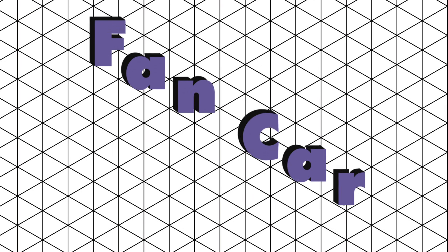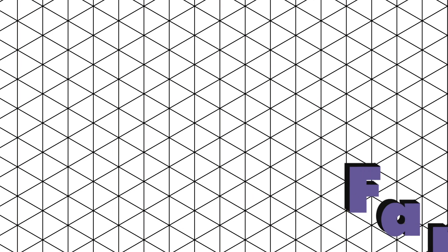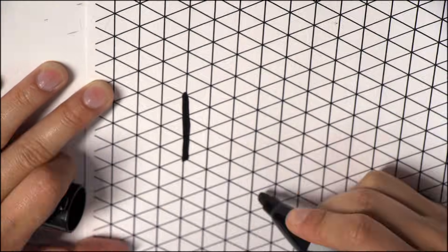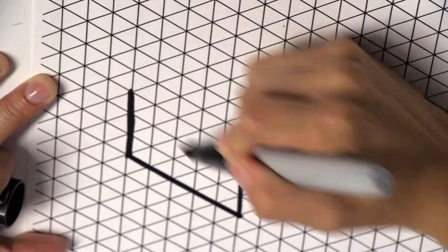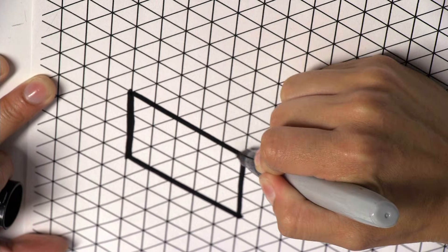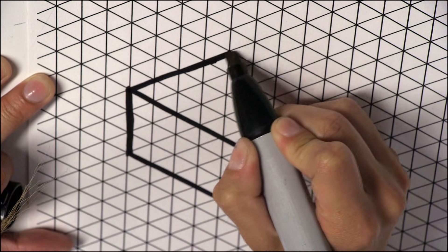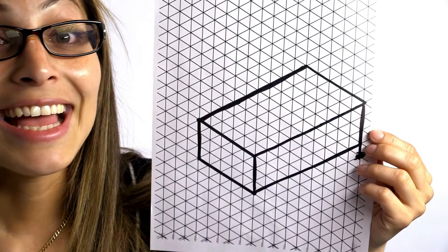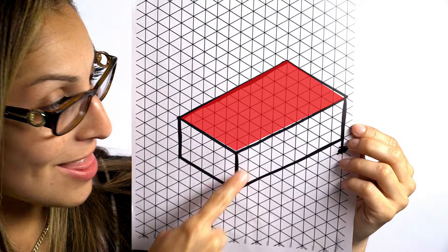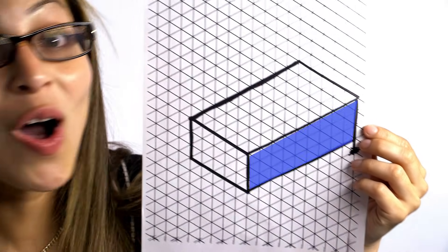Now I'm going to make an isometric sketch of the fan car. These vertical lines are 3 cm and are all the same length. These diagonals are all 5 cm, and these long diagonals are all 10 cm. Now you can see the front, the top, and the side view all in one drawing.